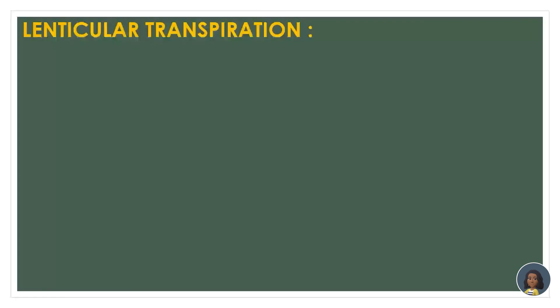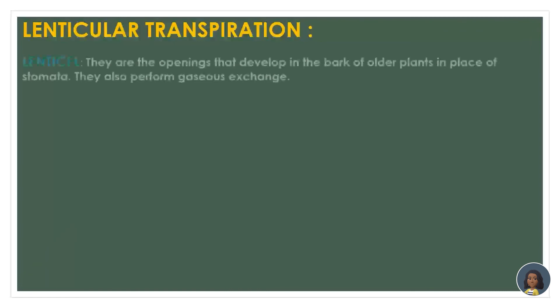The next thing to discuss is lenticular transpiration. I prefer calling it lenticular transpiration because the single term is lenticels. For understanding lenticular transpiration, we must understand what lenticels are. Lenticels are basically openings that develop in the bark of older plants in place of stomata.